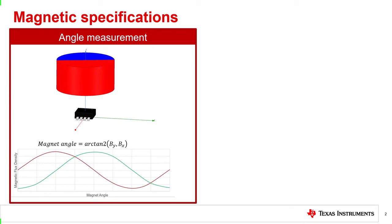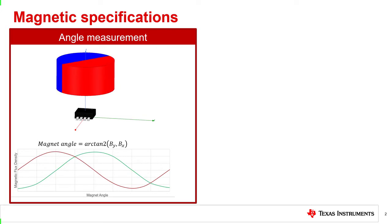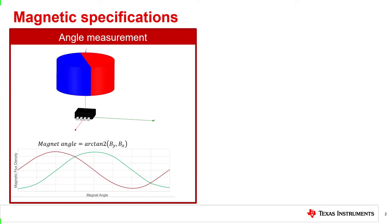3D Hall sensors can be used for detecting angles and distance. For detecting angles, diametrically magnetized cylinder magnets are often used. The two-argument arctangent function can be used to calculate angles. In the example on the left, the magnet rotates along the z-axis so that the x and y components of the magnetic field are changing, as shown in the graph on the lower left.